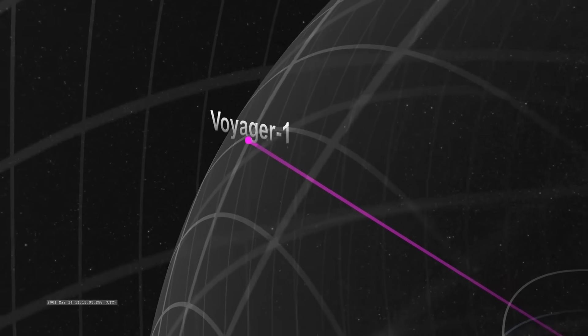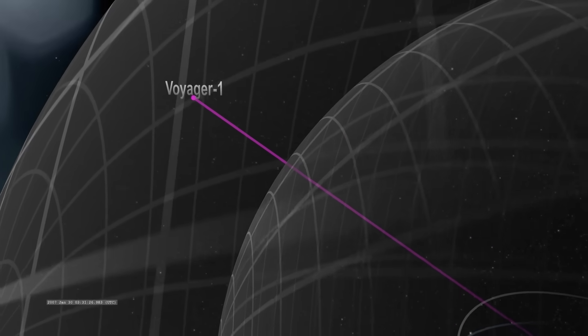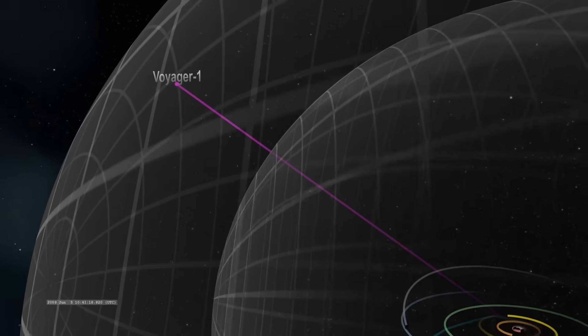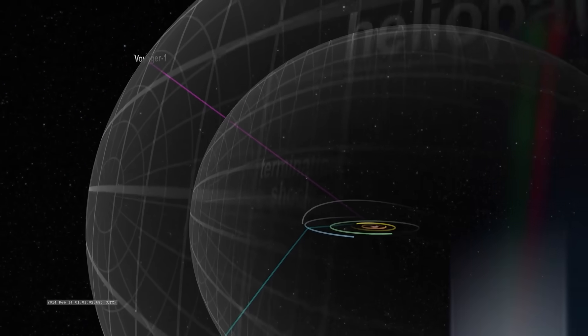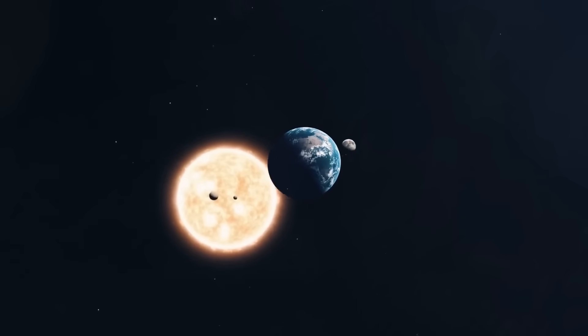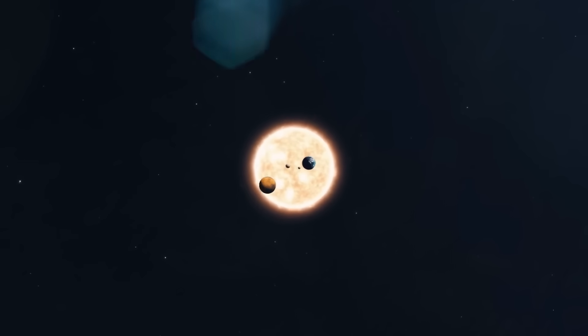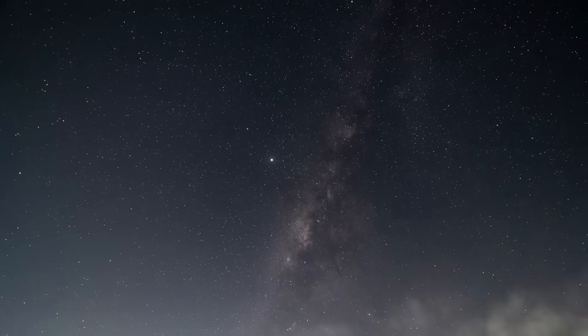Beyond the heliopause, Voyager entered a region once believed to be relatively inert. A quiet, cold vacuum where only sparse particles drifted. But in recent years, the data coming back tells a different story. This region isn't empty. It's dense with unknowns. Magnetic filaments, rogue particles, strange currents that shift direction without explanation.